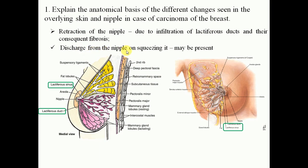Discharge from the nipple might also be seen on squeezing it. The mammary gland consists of about 15 to 20 lobes, each lobe being a cluster of alveoli, and each lobe is drained by a lactiferous duct. The lactiferous ducts converge towards the nipple and open on it. Near its termination, each duct has a dilatation known as the lactiferous sinus. Because of infiltration of these lactiferous ducts by cancer cells and their subsequent fibrosis, there will be retraction of the nipple.